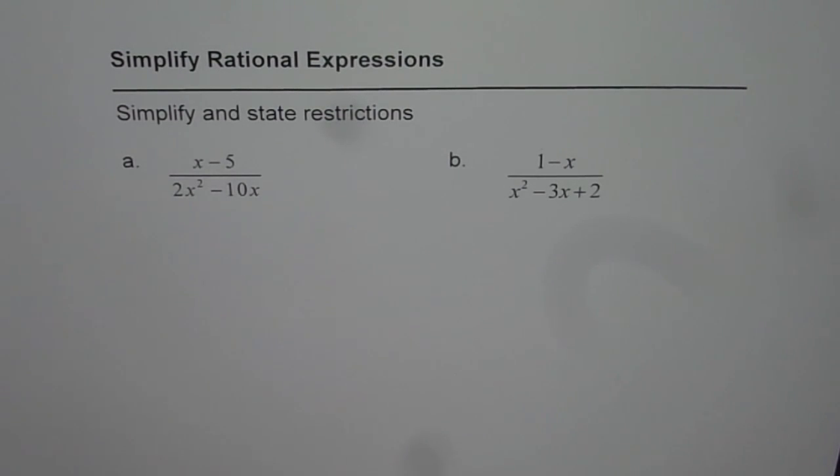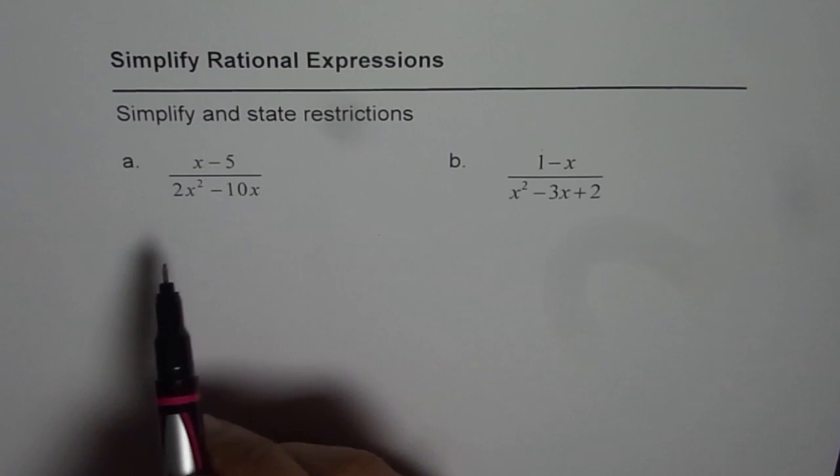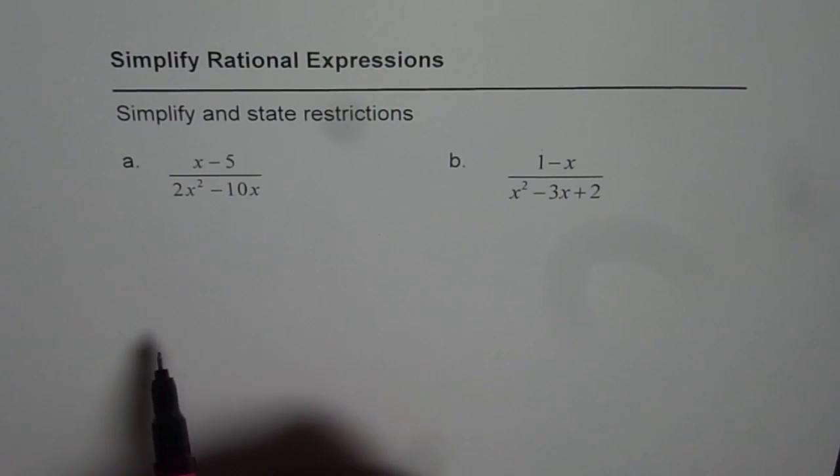We'll simplify using factorization and then state restrictions. Let's do the first one, which is x minus 5 divided by 2x squared minus 10x.